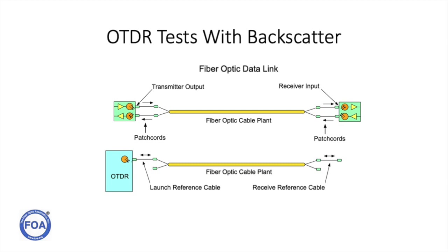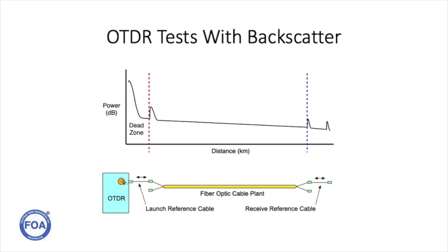The OTDR uses a different method of testing the loss of the cable plant — it uses the backscatter from the fiber itself. But we still use launch and receive reference cables with the OTDR; they merely have slightly different purposes. The launch cable used with OTDR testing is required to get past the dead zone of the OTDR, which can blank out measurements for tens or hundreds of meters. So the launch reference cable has to be long enough to reach past the dead zone to allow the OTDR to make valid measurements, then it connects into the cable plant to measure connection loss.